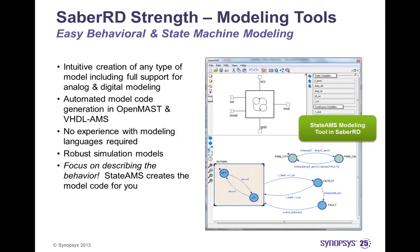If modeling requirements go beyond pure characterization, Sabre RD supports the development of customized models using an intuitive graphical approach. State AMS is Sabre RD's generic modeling solution that uses a state machine-based approach for modeling complex multi-domain behaviors. Unlike other state machine modeling tools, State AMS supports both analog and digital modeling techniques, offering a very flexible method for modeling any sort of physical component or control algorithm. Using the tool does not require experience with modeling languages, as it places the focus on describing behavior with mathematical equations and state diagrams, then generates the model code automatically for immediate use within Sabre RD.